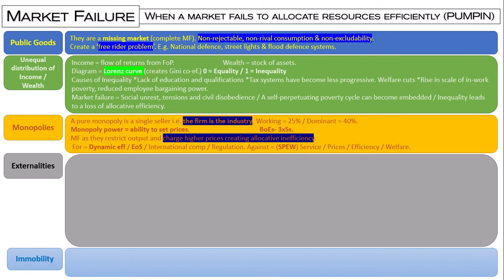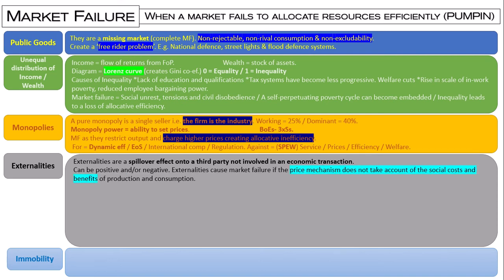So externalities — I'm going to put positive and negative together. See if you can define what an externality is. Externalities are a spillover effect onto a third party that are not involved in an economic transaction. They cause a market failure because the price mechanism does not take the social costs and social benefits of production and consumption into consideration.